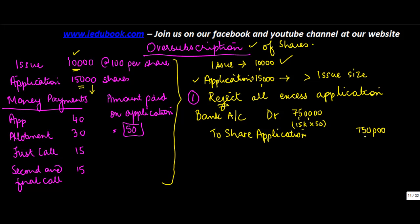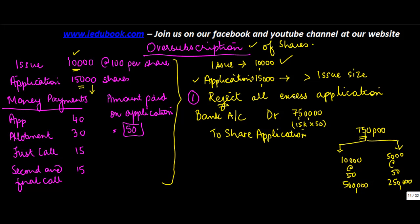Out of the 7,50,000 there are two amounts — one for 10,000 shares and the other for 5,000 shares. For 10,000 shares, I was actually supposed to receive share application money at the rate of 50, which is 5,00,000. On 5,000 shares at the rate of 50, which is 2,50,000, I have rejected the application, so I have to refund this money.